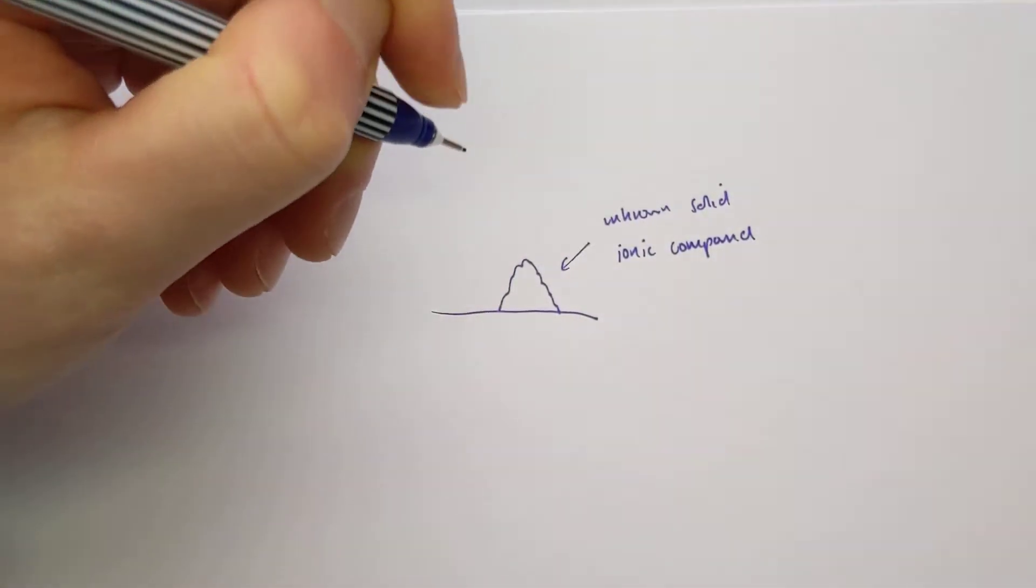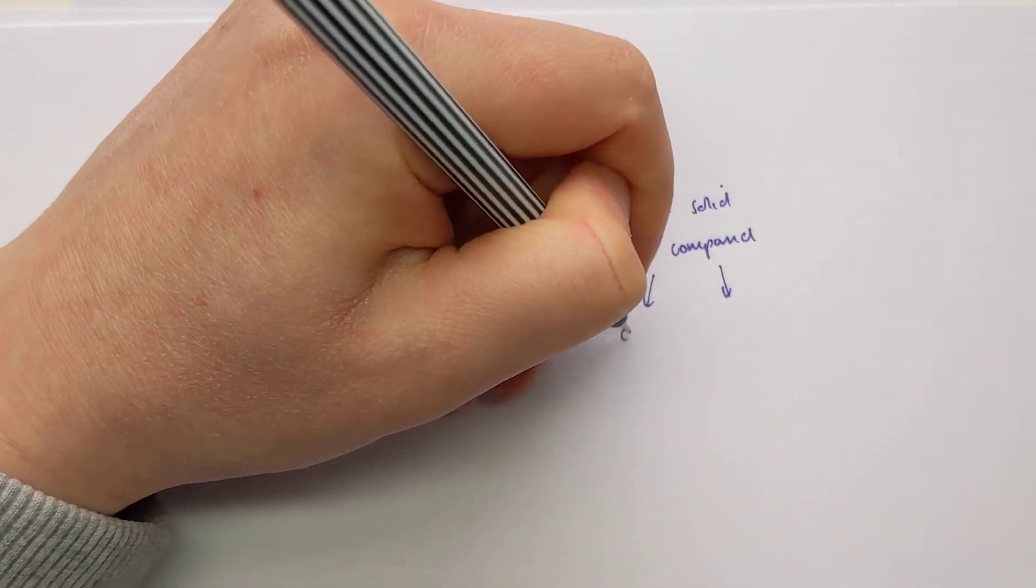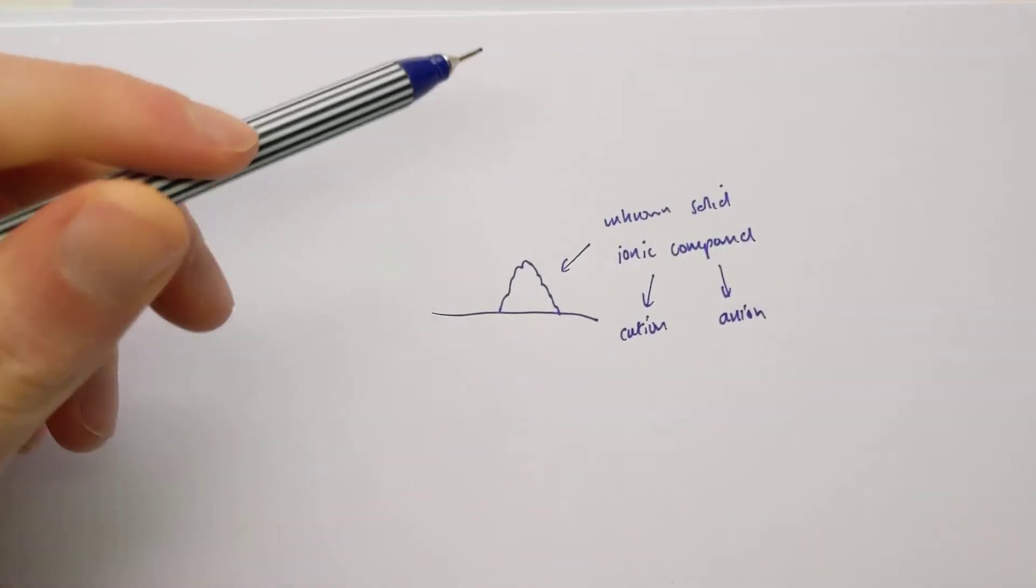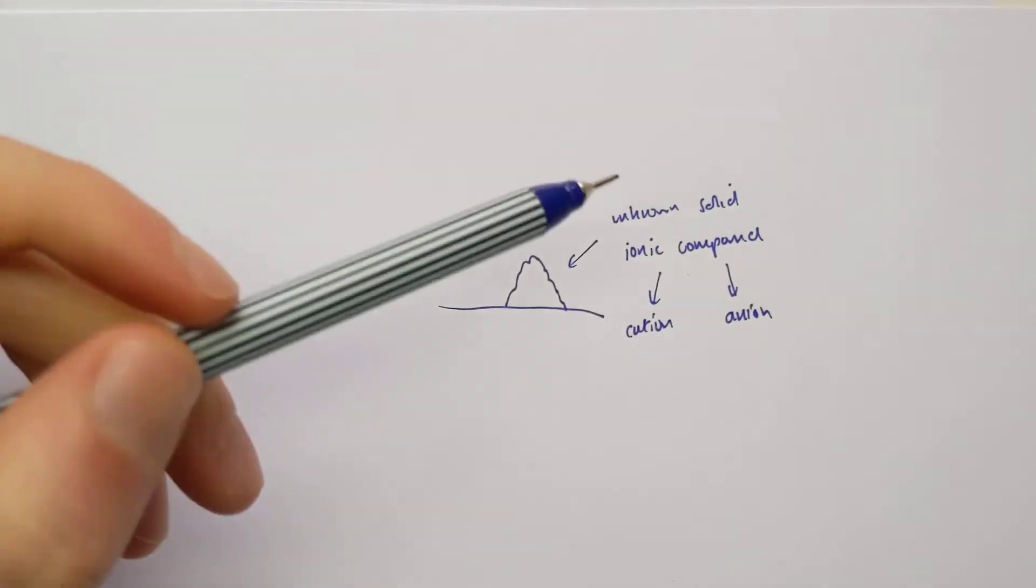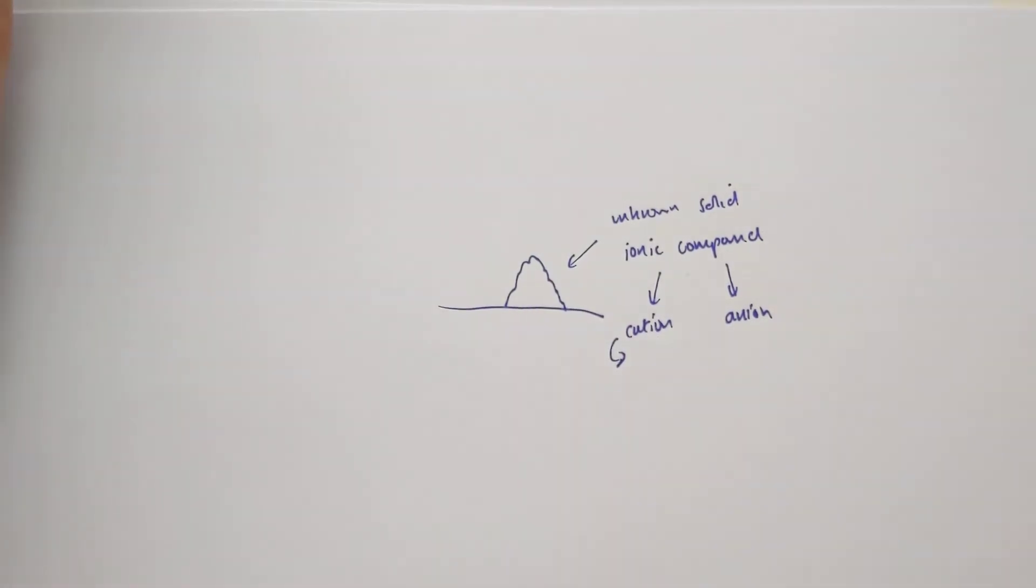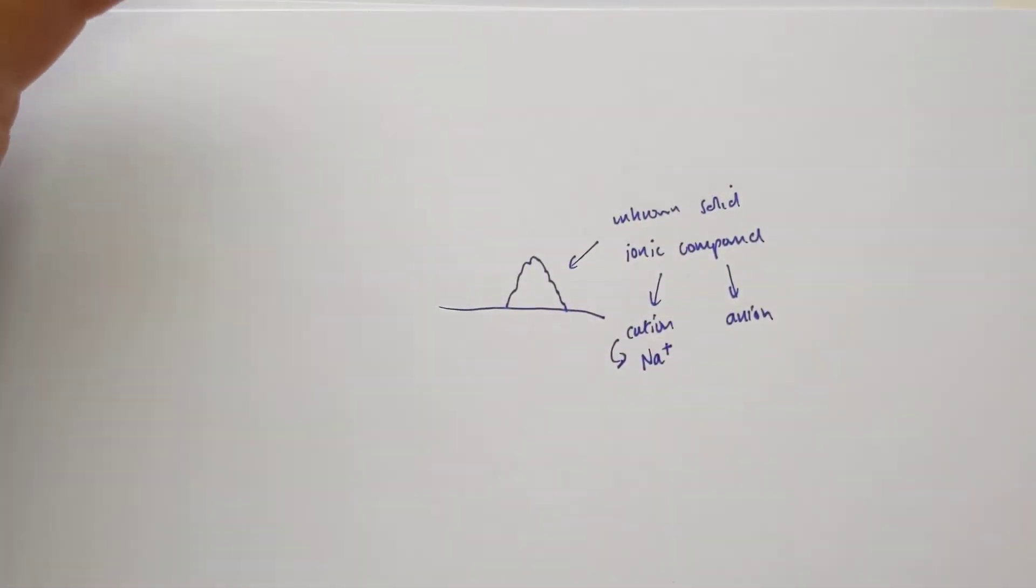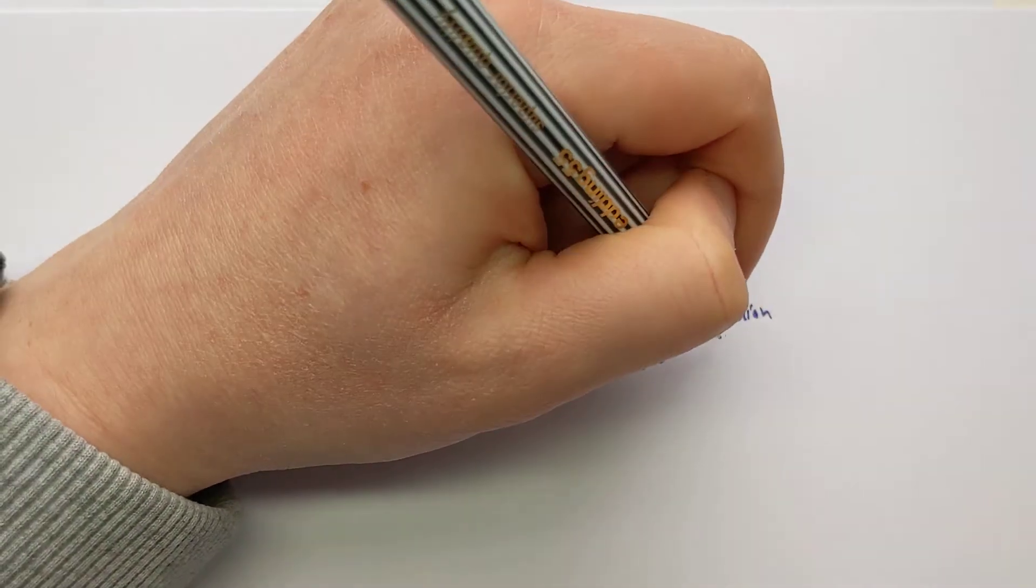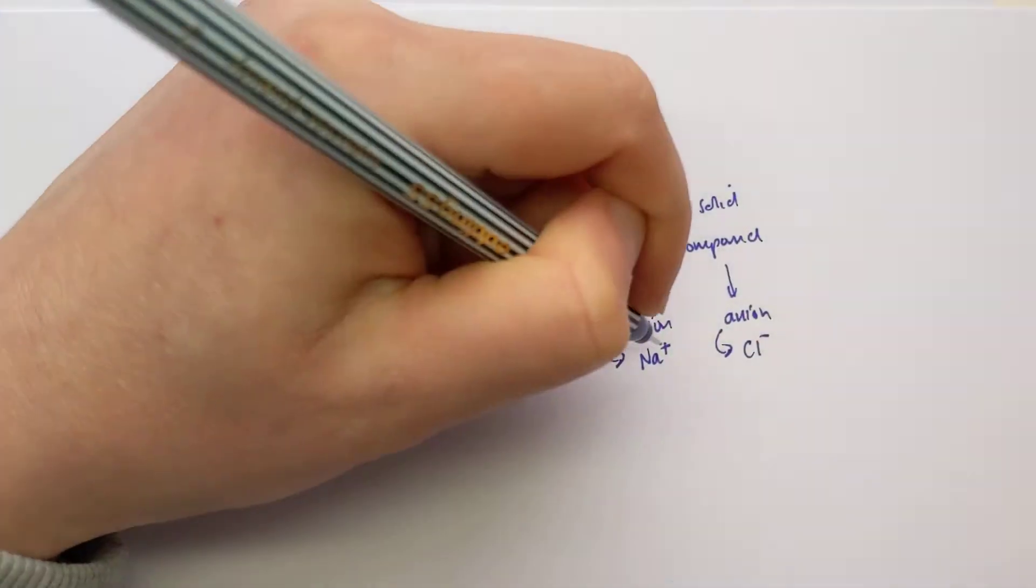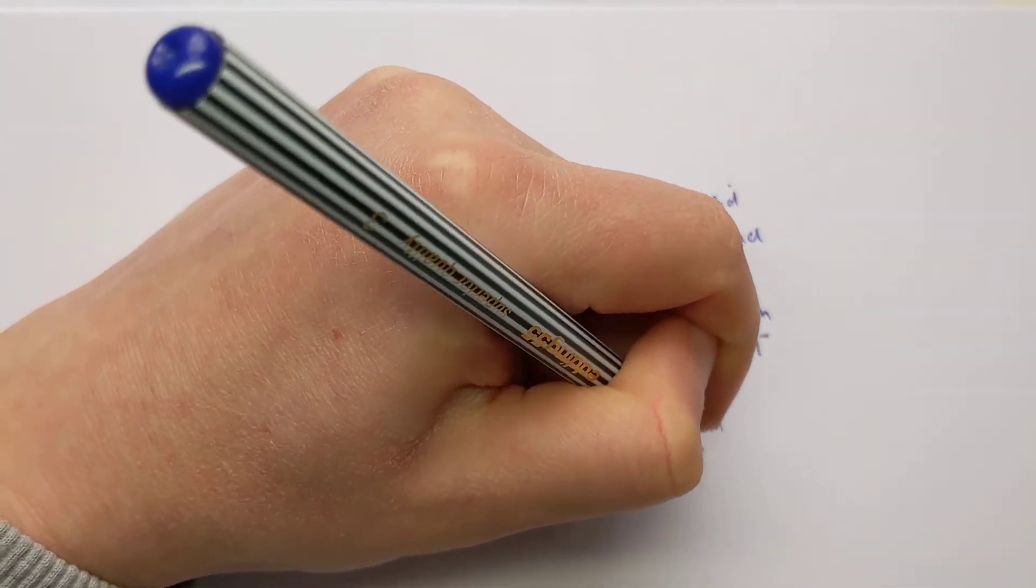If we go along with the fact that it might be an ionic compound, there's two parts to an ionic compound you might remember. There's the cation, which is generally the metal part, and the anion. So if we're trying to identify what this compound is, we actually have two bits we need to work out. We need to work out what the cation is and what the anion is. Let's say I do a test and I work out that this cation happens to be a sodium ion. That's a metal ion that's positively charged, it must be a cation. And let's say I do an anion test and it might tell me the anion is the chloride ion. If I've worked out those two parts, that must tell me that the compound is NaCl, sodium chloride.